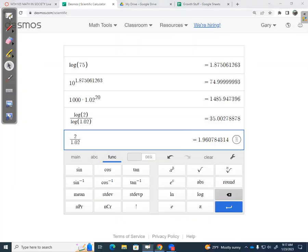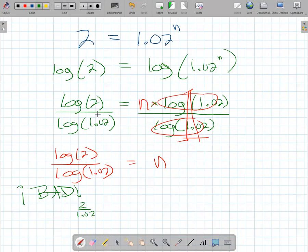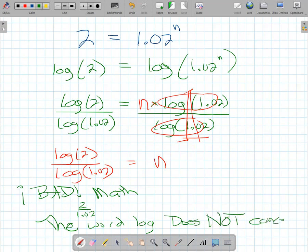You cannot cross out the word log. It doesn't work that way. So back to my notes here. Canceling the logs is bad math. The word log does not cancel like division with division. Looks like fun, but it don't work.